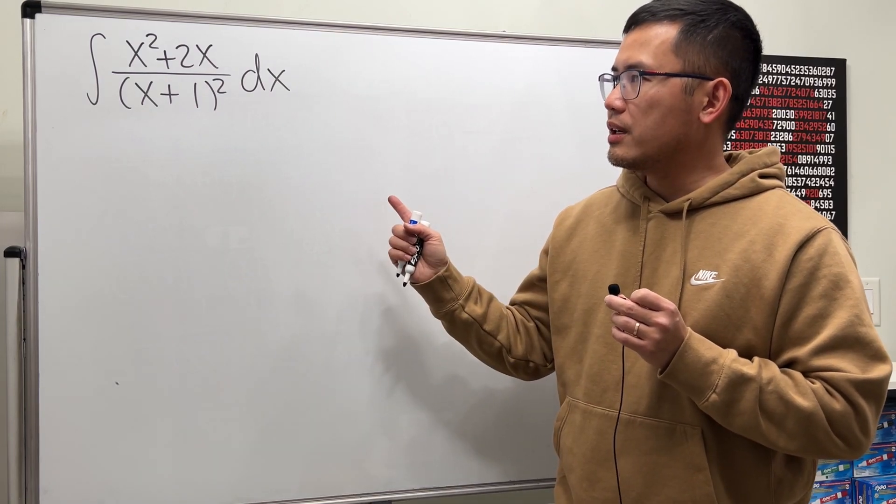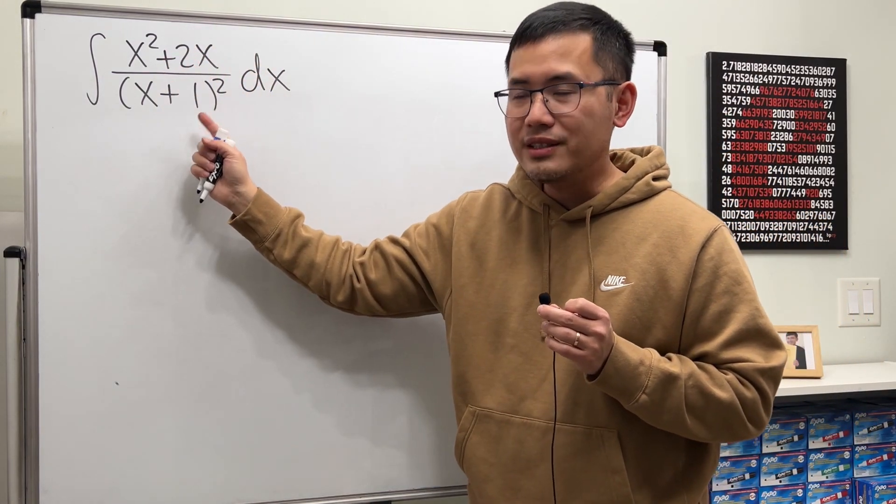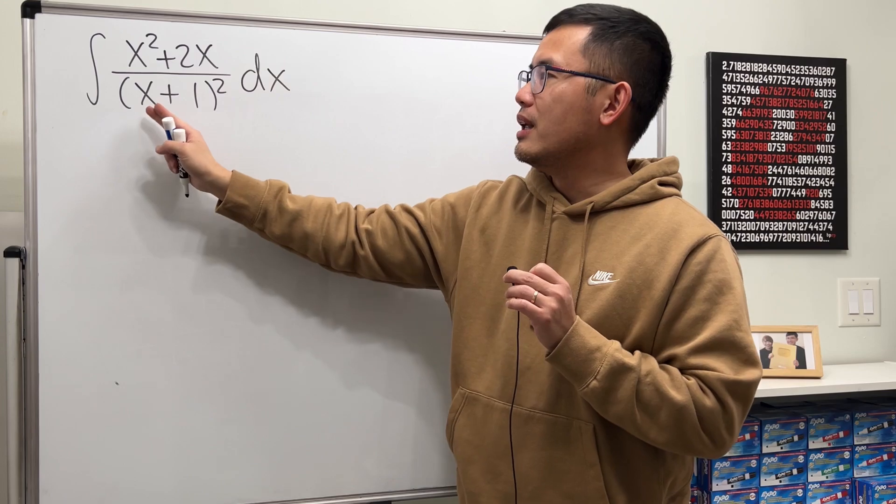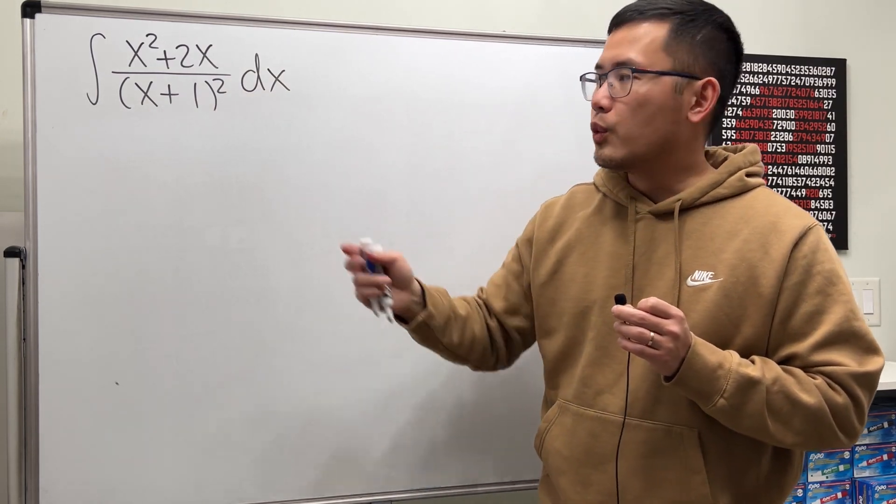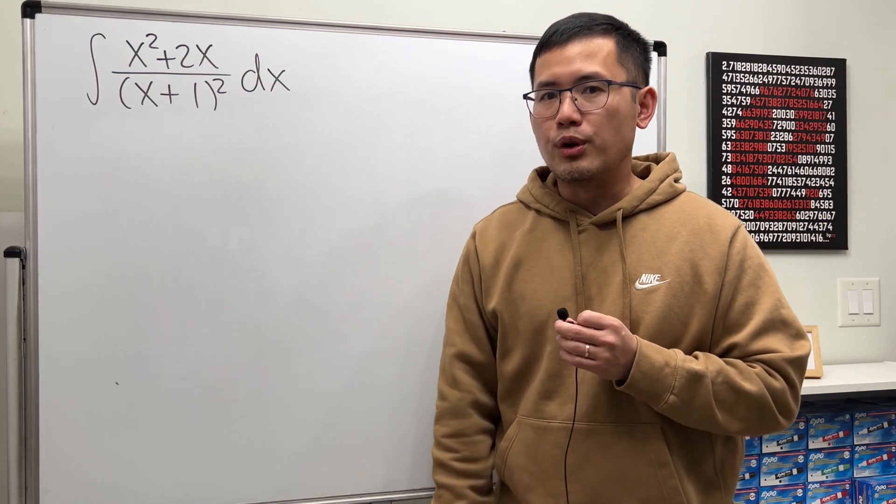Notice that this is a rational function. The degree on the top is 2, likewise the degree on the bottom is also 2. When the degrees are equal, we should do polynomial long division to simplify the expression.